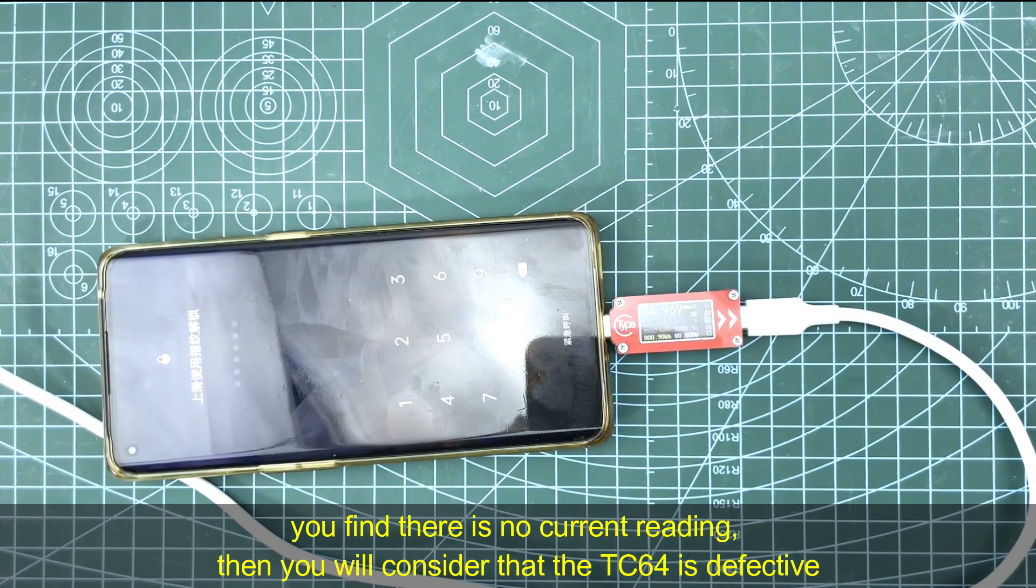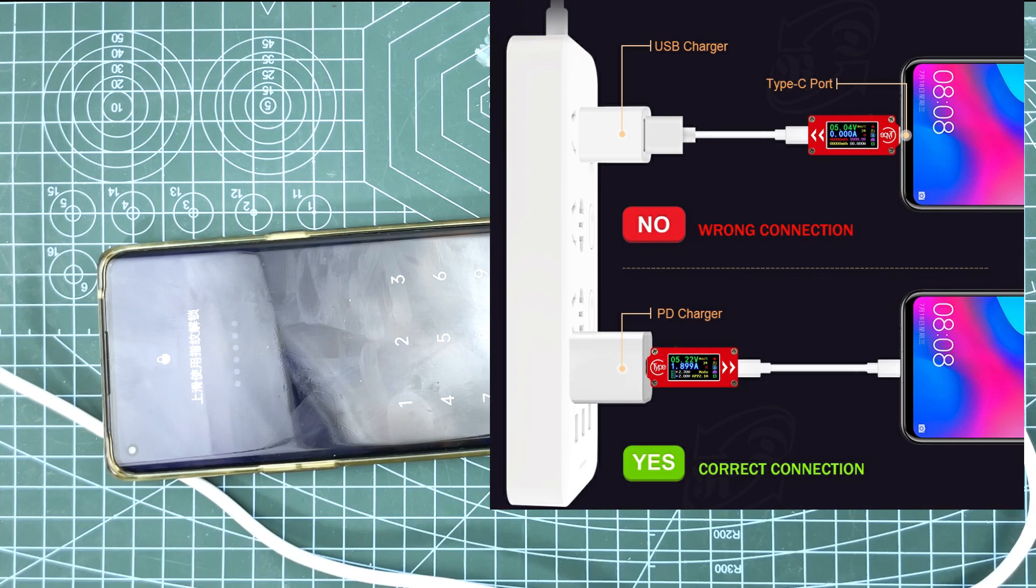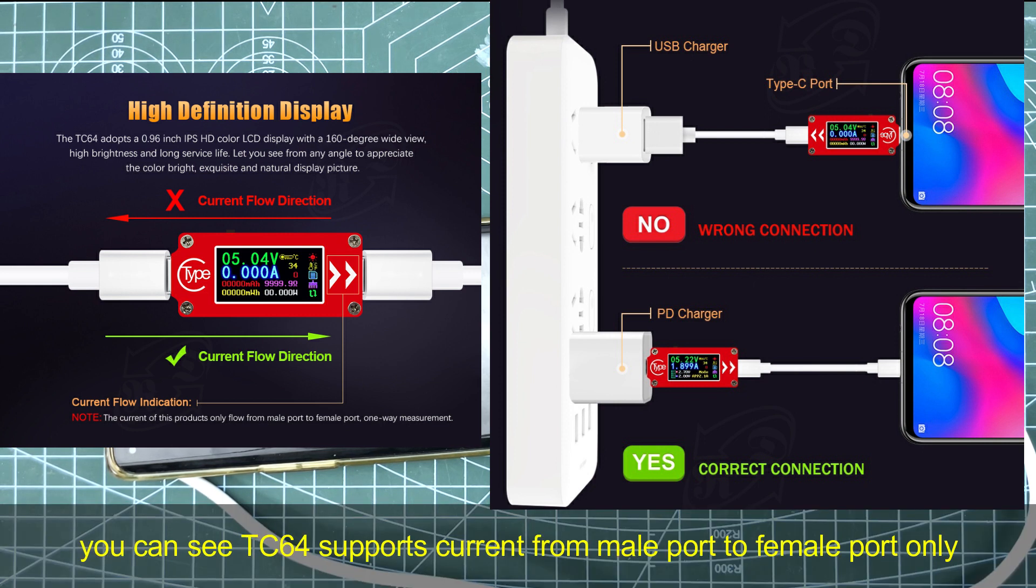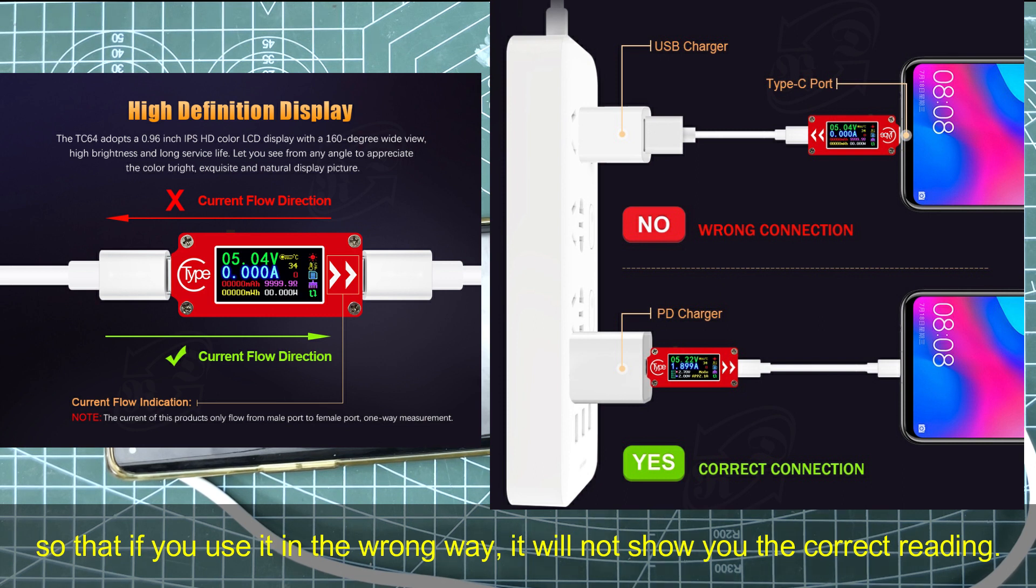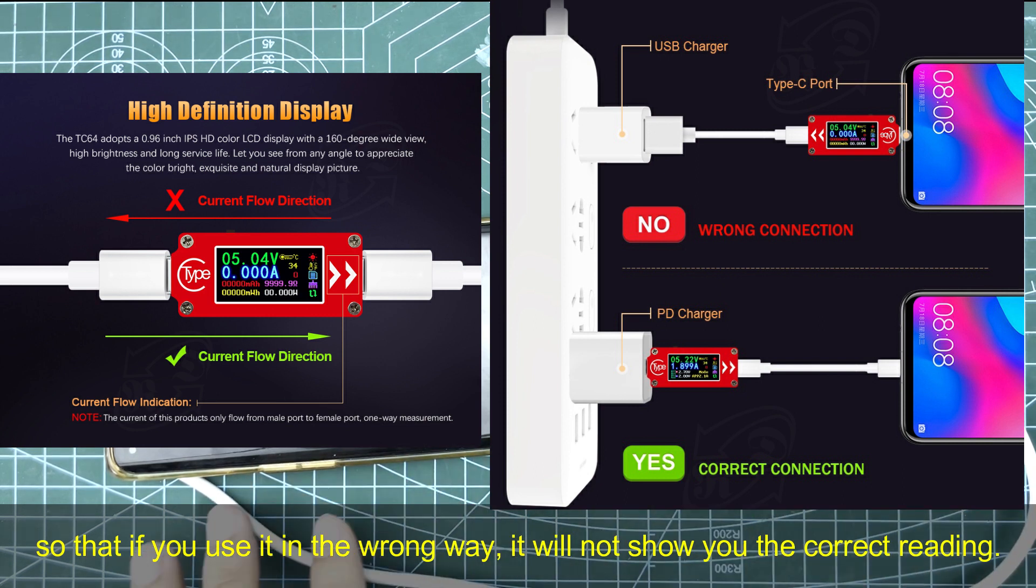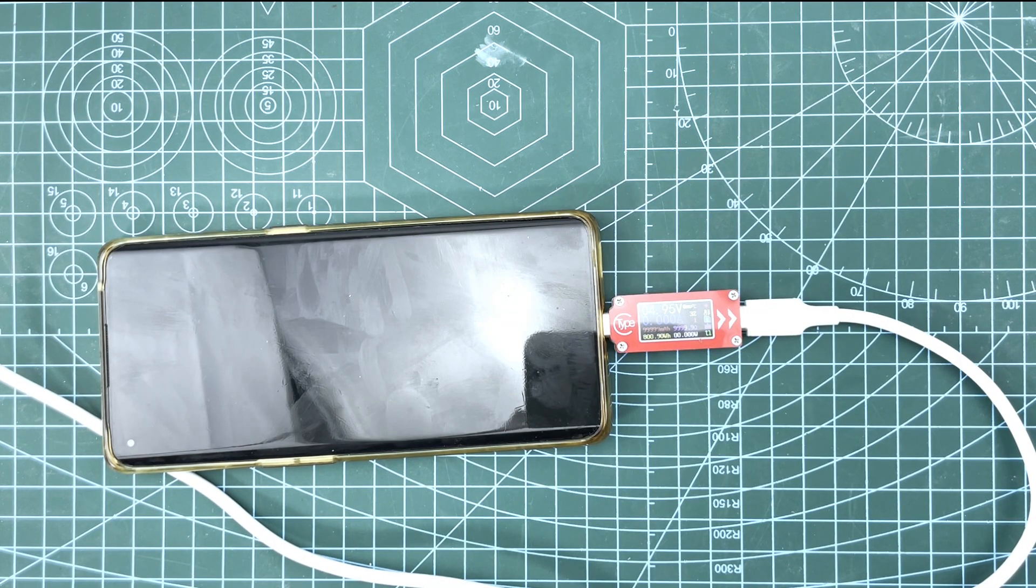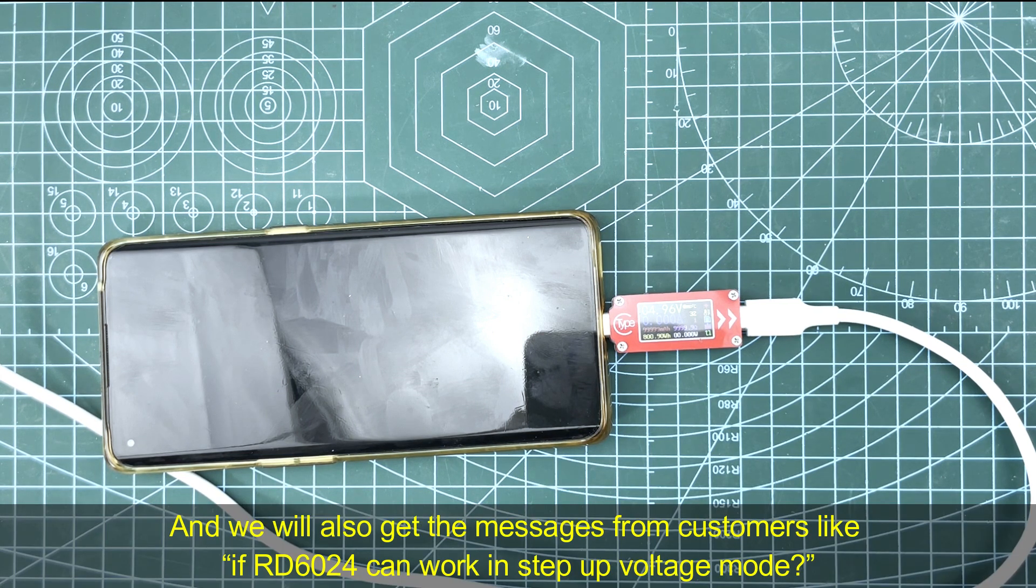Then you'll consider if the TC64 is working normally. You can find the reason and solution on the product page. You can see TC64 supports current from male port to female port only.